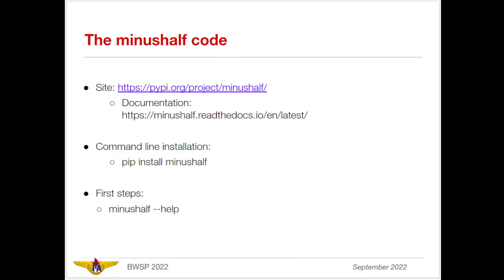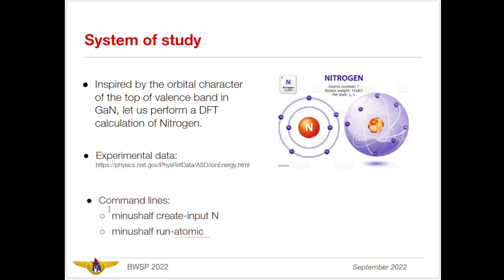In this tutorial we will study the nitrogen atom. As you may have seen in the other videos, we are working on the tutorial of DFT-½ and the system of investigation is gallium nitride, which has the top of the valence band derived from p-orbitals of nitrogen. Motivated by this, we are going to study atomic calculations of nitrogen — starting with creation of the input file and running a DFT atomic calculation.